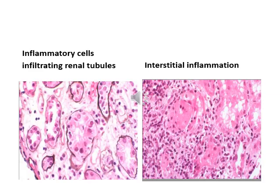On the right side photo, we can see interstitial inflammatory cells infiltrating between the tubules in the interstitial area. On the left side, we can see inflammatory cells — which are the smaller cells — infiltrating between the epithelial cells of the tubules.